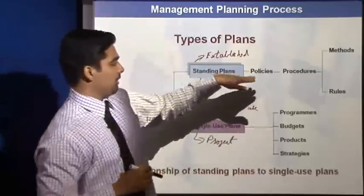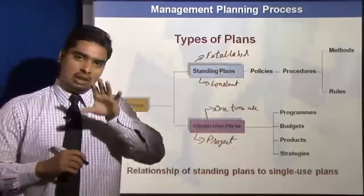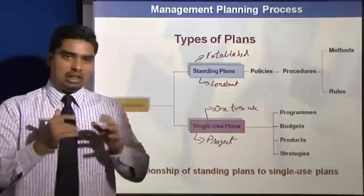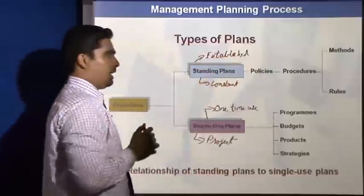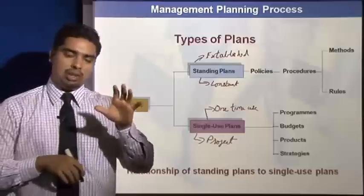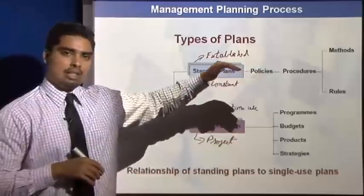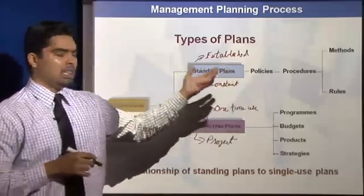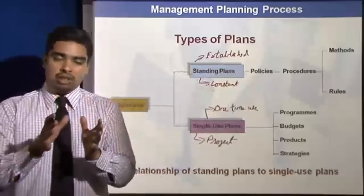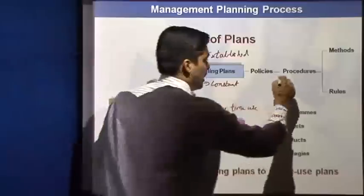Now what is a policy, procedure, methods, and rules? A policy is something like a framework under which you can work — the most critical criteria. For example, we have a policy of resolving customer complaints within 10 days. That could be a policy. Policy says it only in brief and it could be interpreted in different ways. It does not tell you exactly how to do it — that is when you have the procedure.